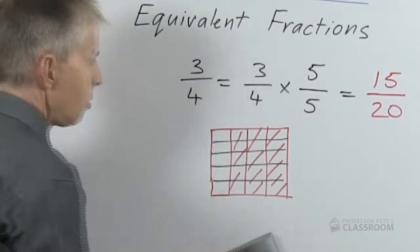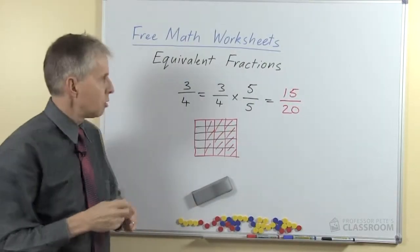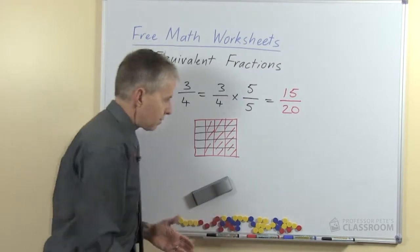Try and get this accurate, there we go. And again we can see three-quarters is the same as fifteen-twentieths.